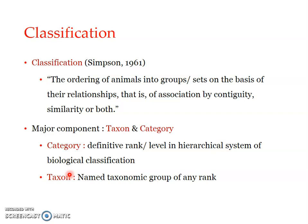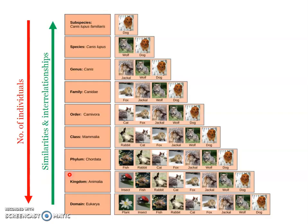Each category above the level of species contains groups of lower categories, which in turn contain still more groups of still lower groups. For example, family Canidae has different genera, and a genus may include several species.